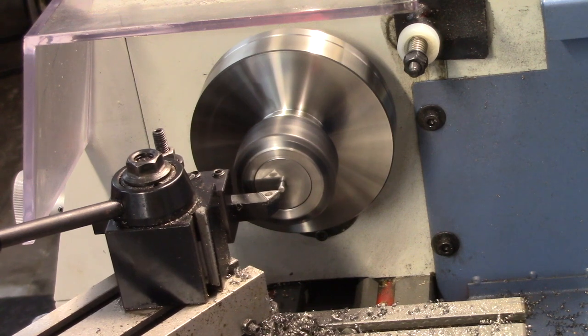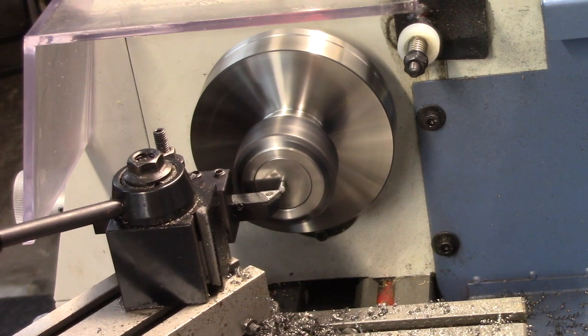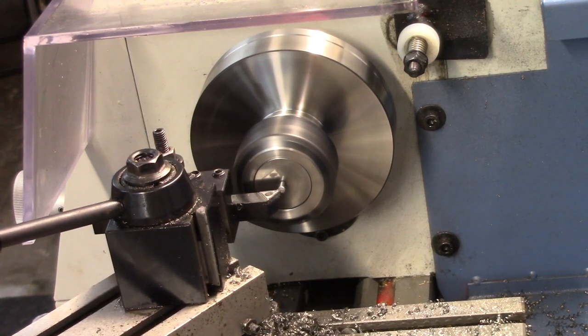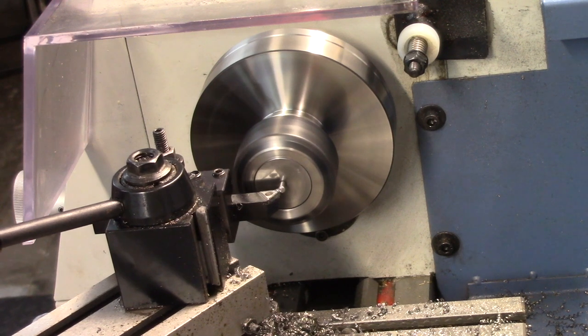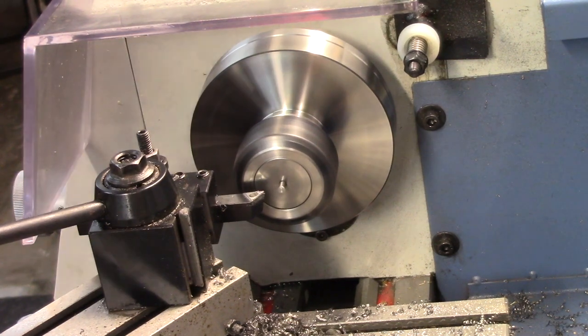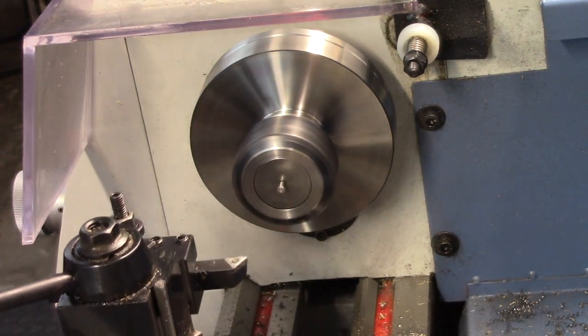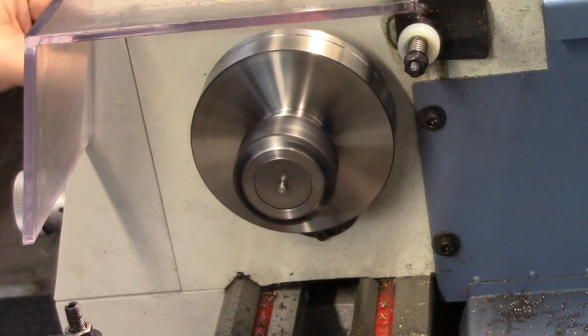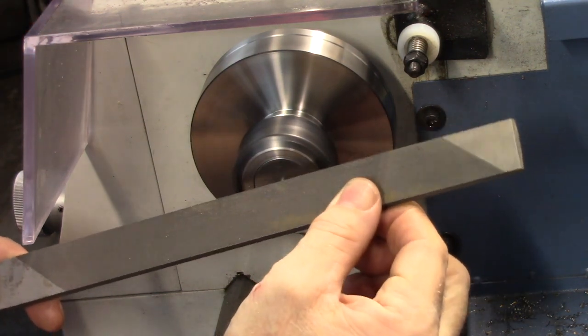Next, the crankshaft axle is turned from the same tool steel rod. Both ends are faced, and the edges are relieved with a lathe file.